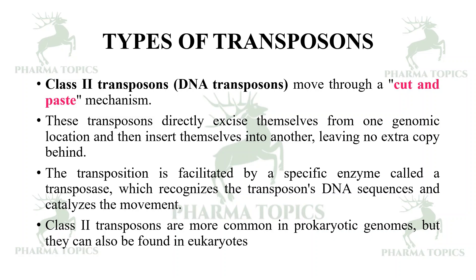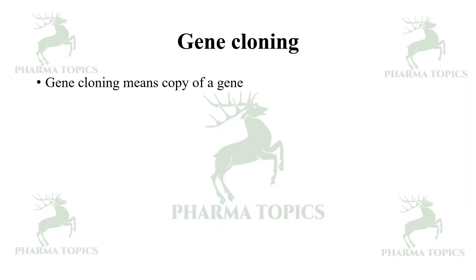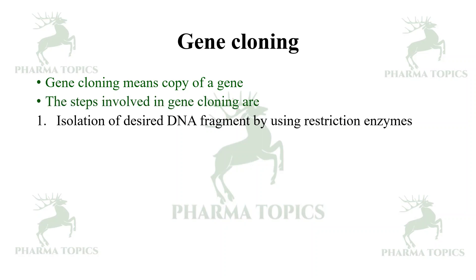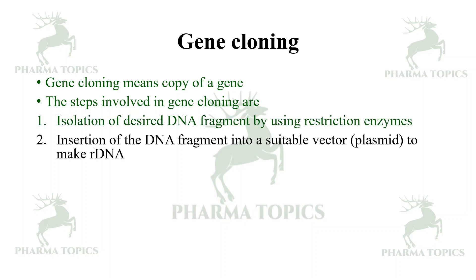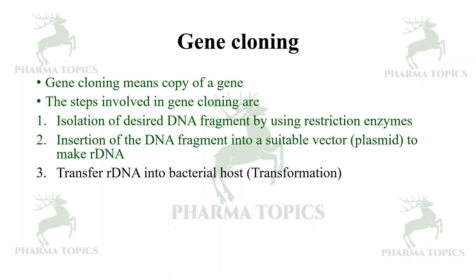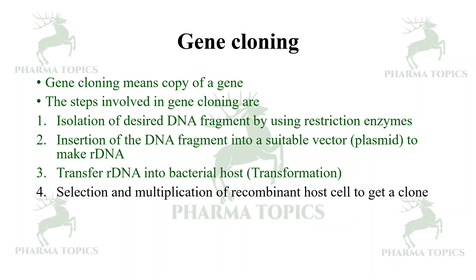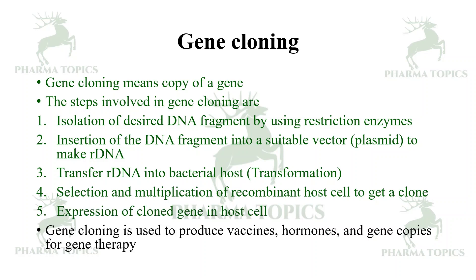Gene cloning means copying a gene. The steps involved are: isolation of a desired DNA fragment using restriction enzymes; insertion of the DNA fragment into a suitable vector such as a plasmid to make recombinant DNA; transfer of the recombinant DNA into a bacterial host through transformation; selection and multiplication of the recombinant host cell to get a clone; and expression of the cloned gene in the host cell. Gene cloning is used to produce vaccines, hormones, gene copies for gene therapy, and also in production of transgenic organisms.